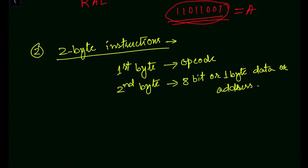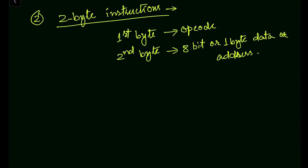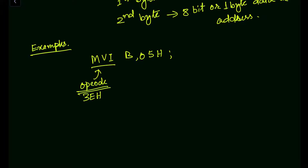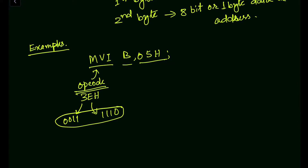The first example of a two-byte instruction is MVI B, 05H. In this instruction, MVI is the opcode. The hex code for MVI is 3EH. If we represent 3EH in binary: 3 is 0011 and E is 1110. The register B is specified, and 05H is the data. So the data 05H will be moved into register B.